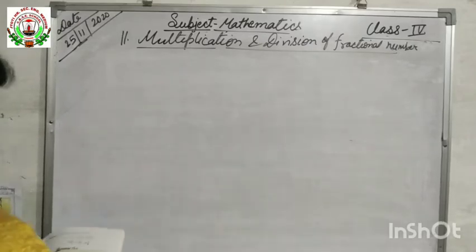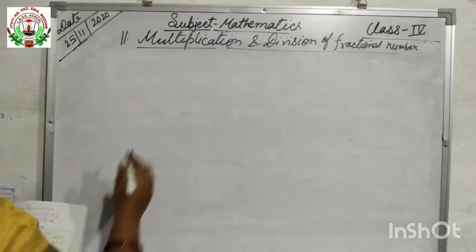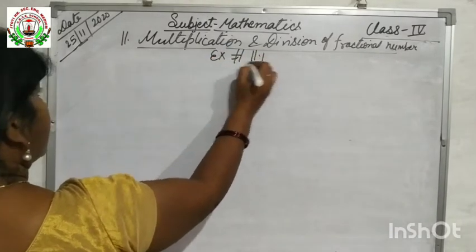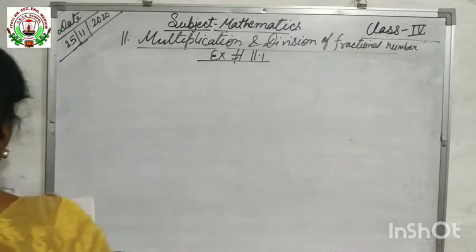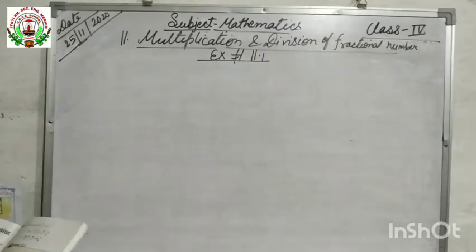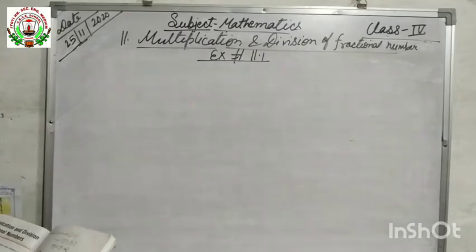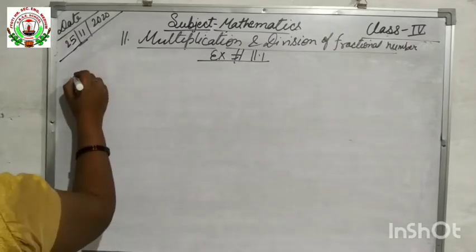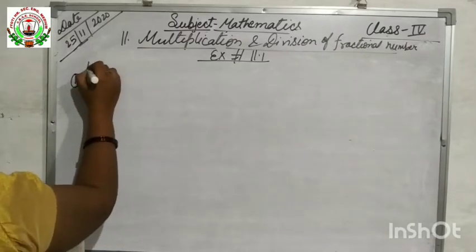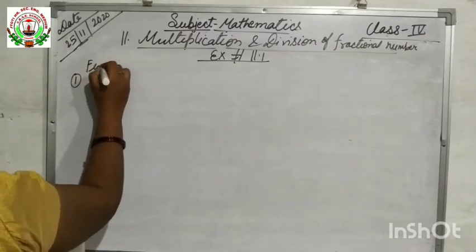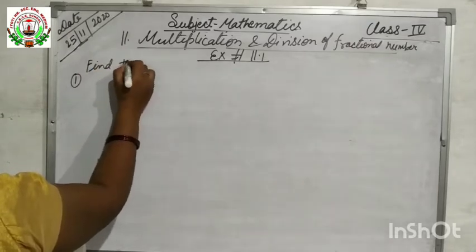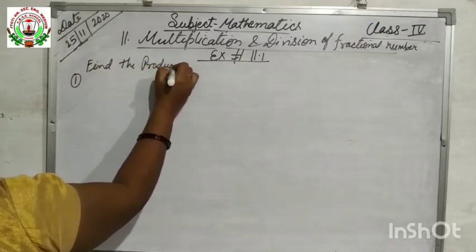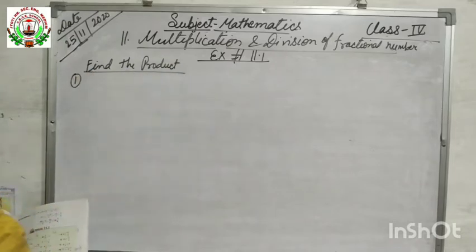It is your exercise 11.1. In multiplication of fraction by a whole number, today we will solve. By solving, we will learn how to solve the problem. Find the product — you know product means multiplication.